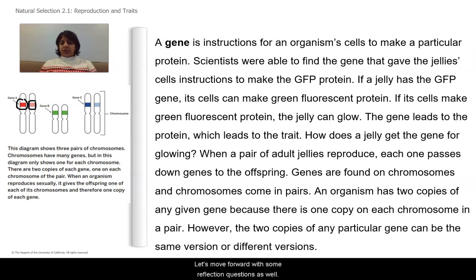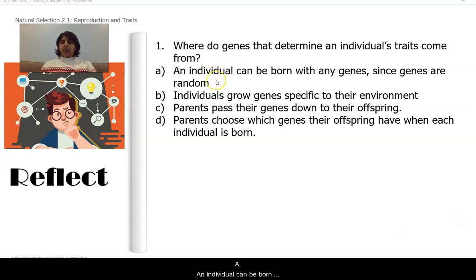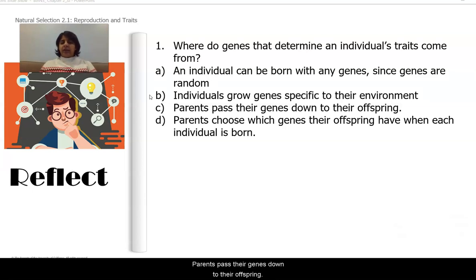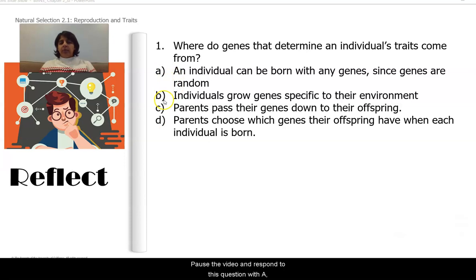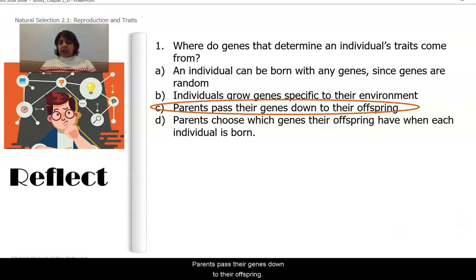Let's reflect on what we've learned today. First question: Where do genes that determine an individual's traits come from? A: An individual can be born with any genes, since genes are random. B: Individuals grow genes specific to their environment. C: Parents pass their genes down to their offspring. D: Parents choose which genes their offspring have. Pause the video and respond with A, B, C, or D. The answer is C — parents pass their genes down to their offspring.